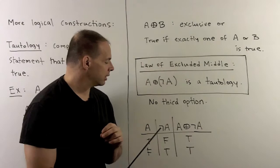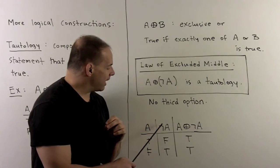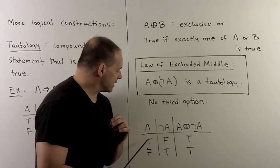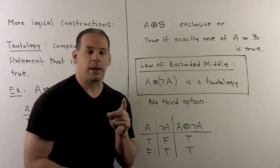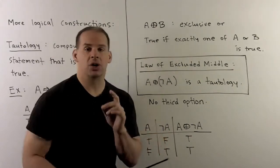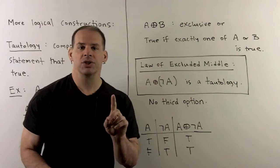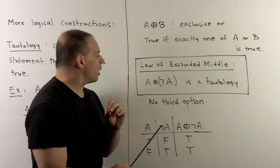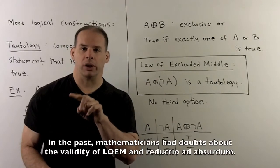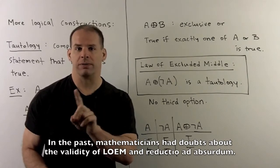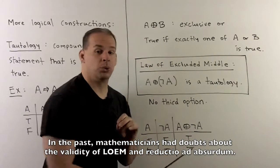Let's verify with the truth table. A can be true or false, so not-A is false or true. When we apply exclusive-or, we have exactly one of our statements true, giving us true for each entry in the last column. So A exclusive-or not-A is a tautology. This means we must have exactly one of A or not-A true — a feature of Boolean logic, where statements are either true or false. There can be other forms of logic with a third option between true and false.